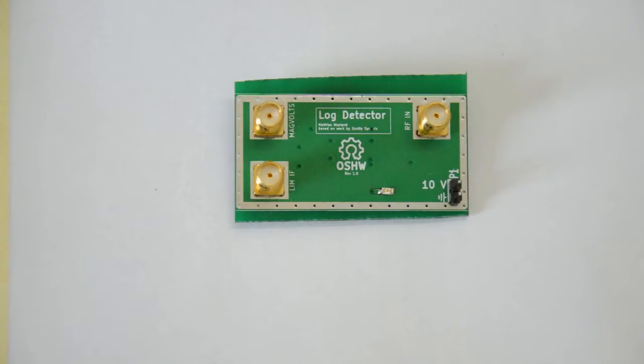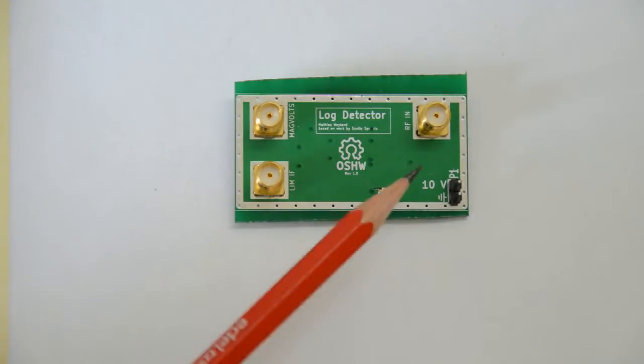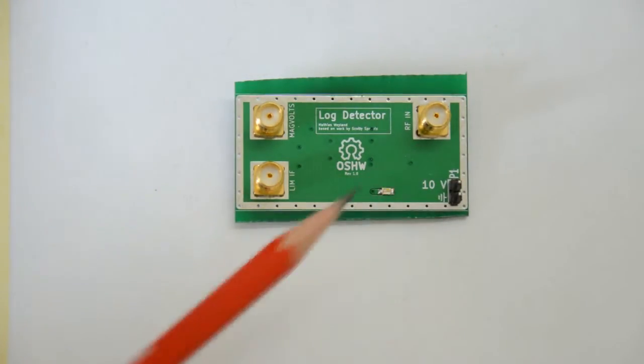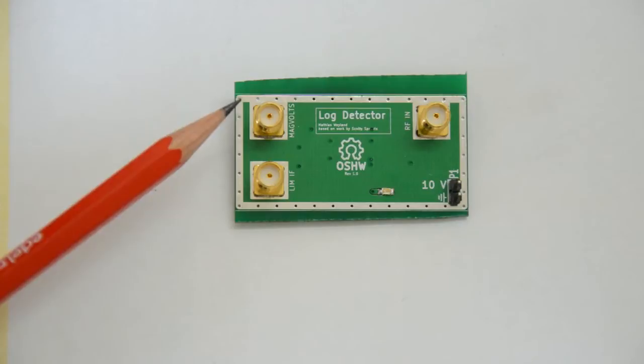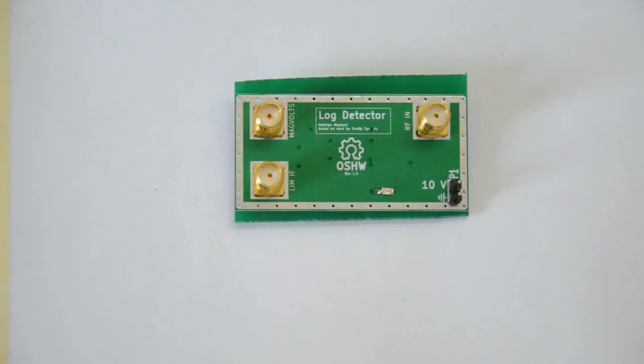In the meantime I soldered up that lock detector board which you can see here, although I haven't powered it up yet so I'll do that on camera as usual. There is one RF input here, a limiter output and a log voltage output as I discussed last time.